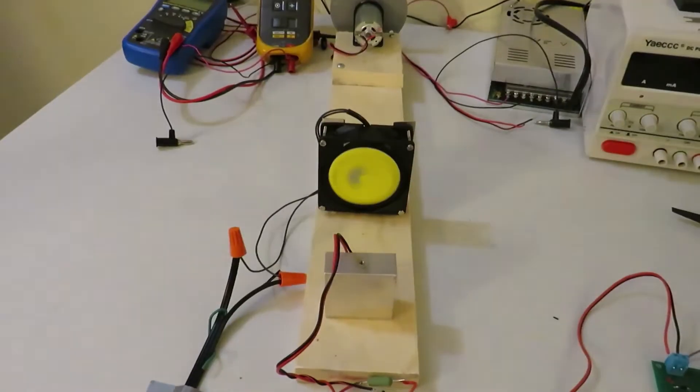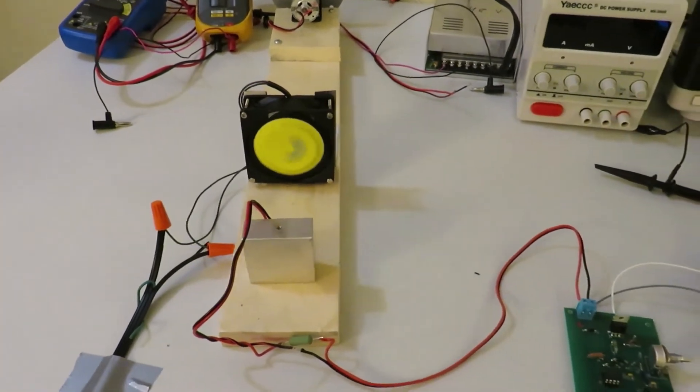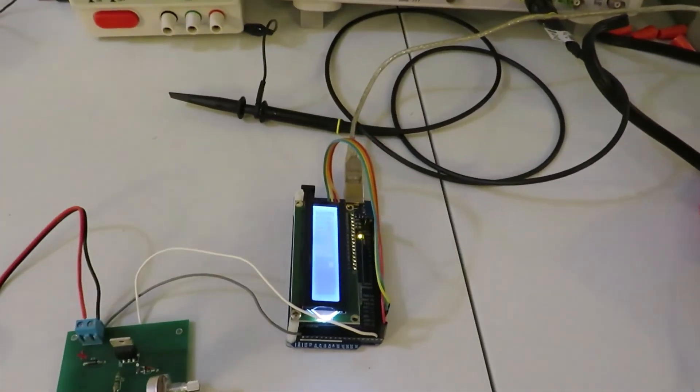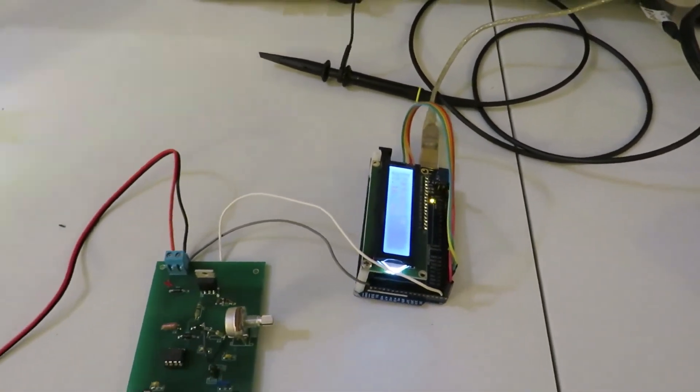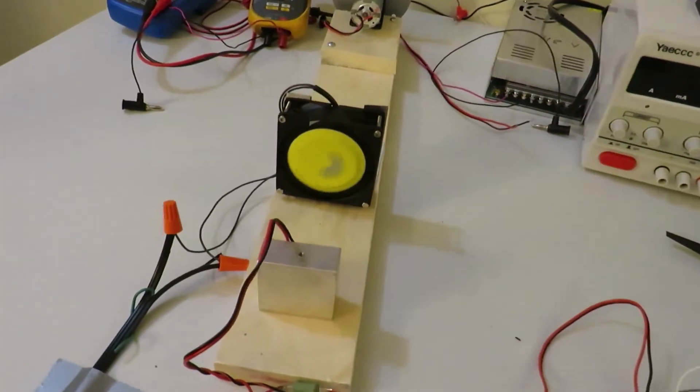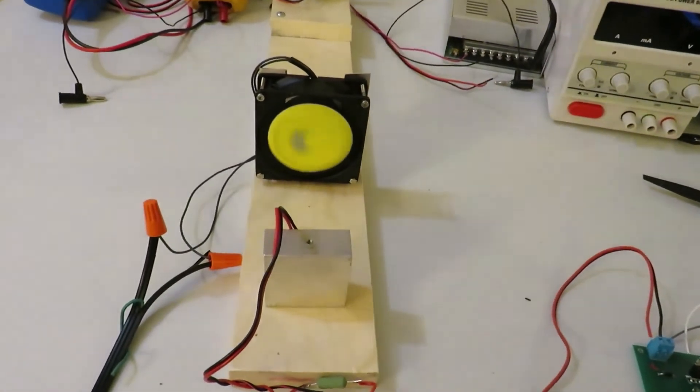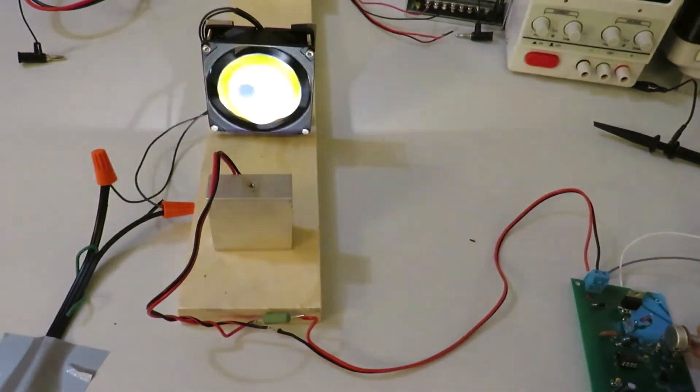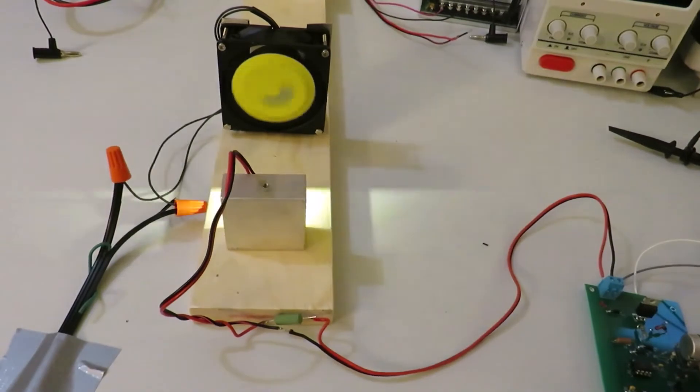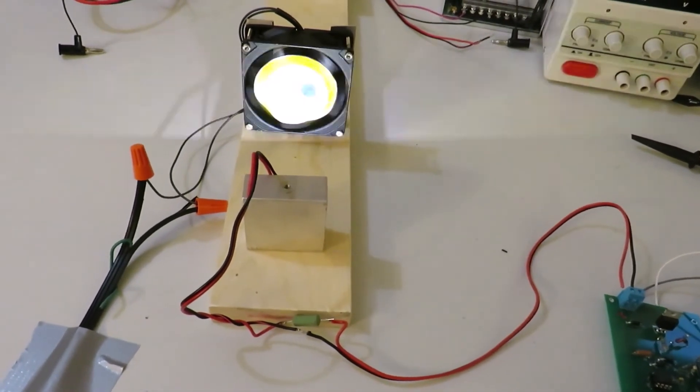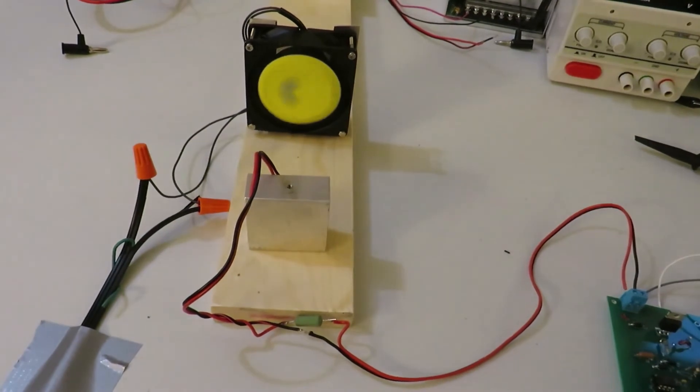By adjusting the potentiometer knob, we can change the frequency. The frequency at this point is low. I am increasing the frequency at this point.